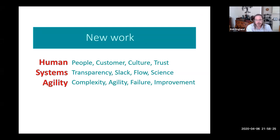So when we talk about the new ways of working, we're talking about that big slide before with all the words related with human systems agility. But the actual aspects in terms of work are this slide here, right? So we group it up that human work is working around people, customer, culture, and trust. Systems work is thinking about transparency, slack, flow, and being data-driven, using science to think about our work. And agility is around understanding complexity, agility, failure, and improvement.